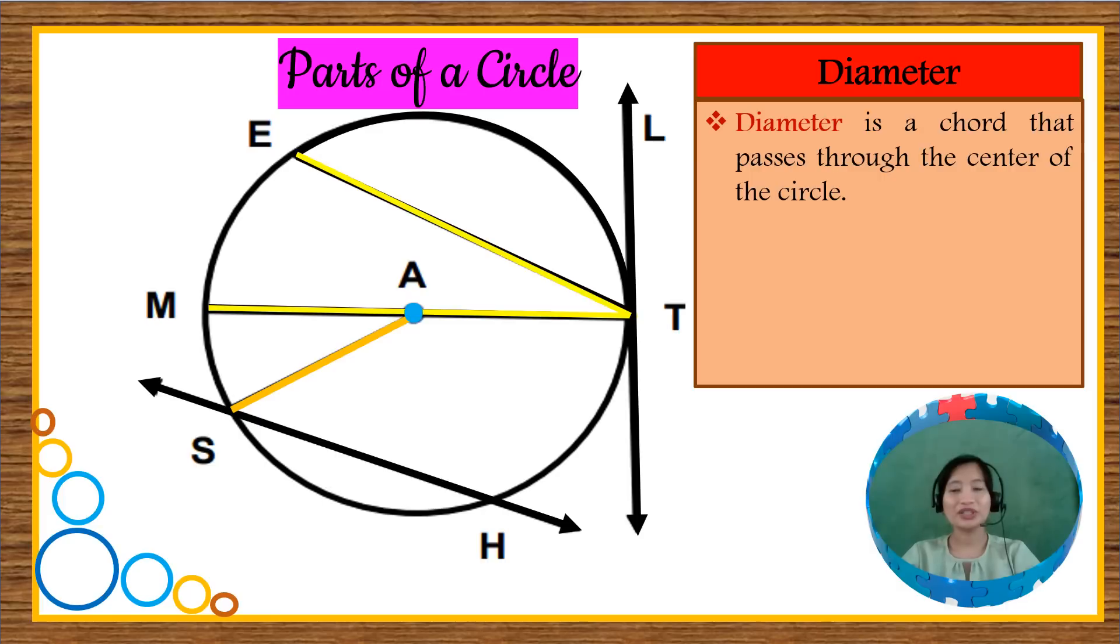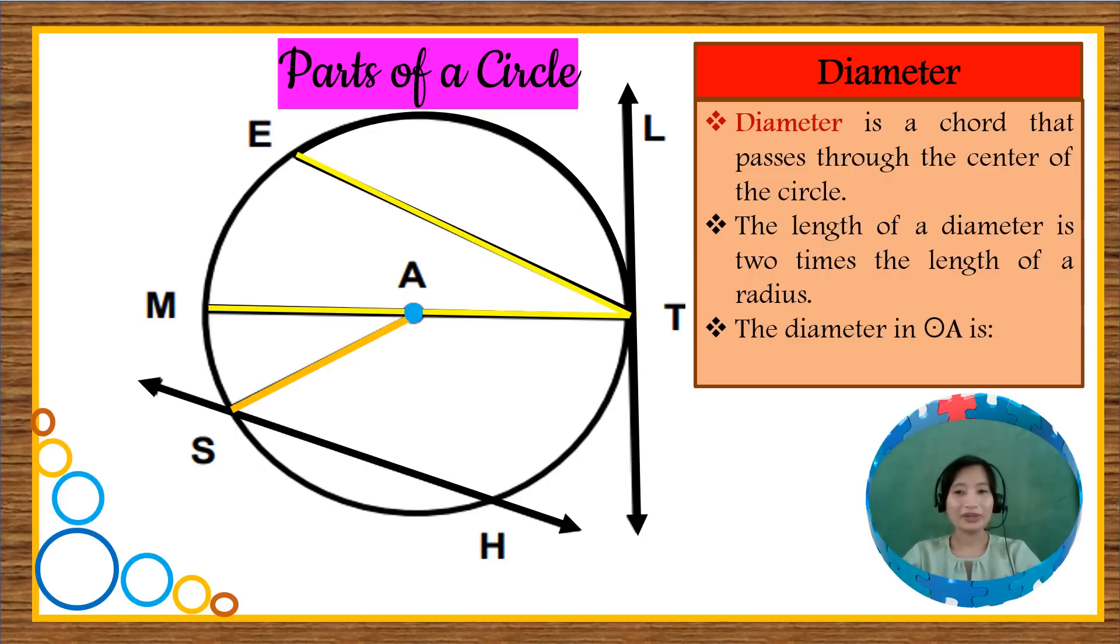A special type of a chord is called the diameter. A diameter is a chord that passes through the center of the circle. The length of a diameter is two times the length of a radius. In our diagram, the diameter in circle A is line segment MT because it passes through the center A.